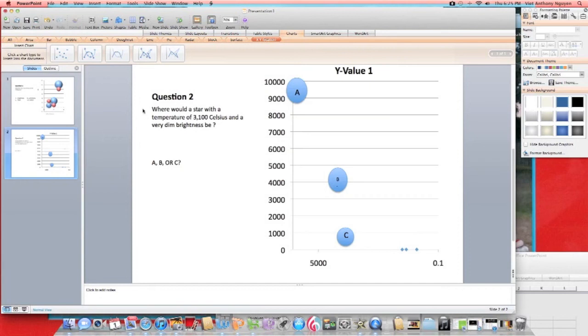Question 2. Where would a star with a temperature of 3,100 degrees Celsius and a very dim brightness be? A, B, or C. Please pause now or I will announce the answer. Answer is C.